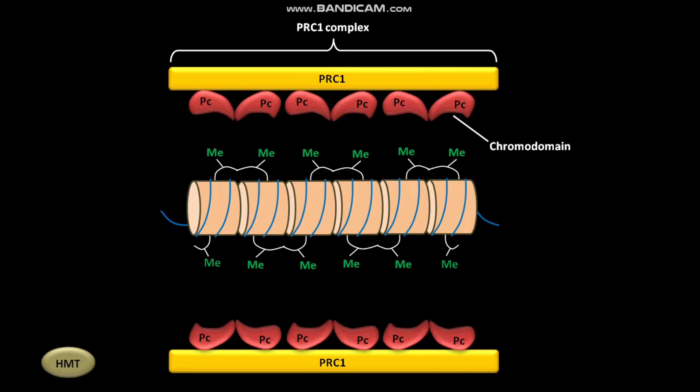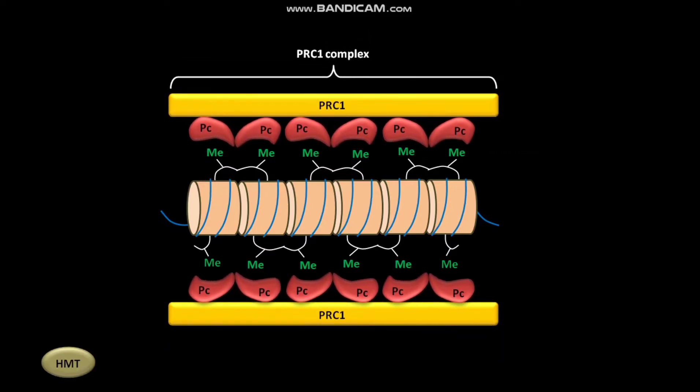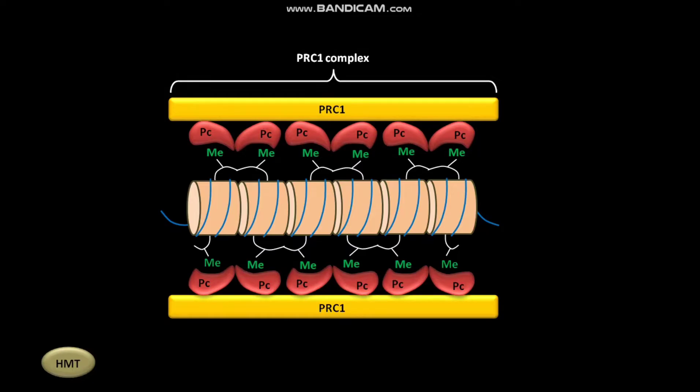This chromodomain is specific for methylated H3-lysine-27 or K27. The chromodomains of PC subunits in the PRC1 complexes then bind to the methylated H3-lysine-27 or K27 in the nucleosomes.